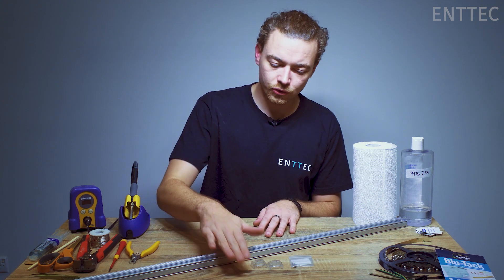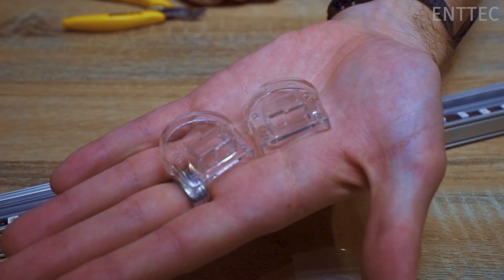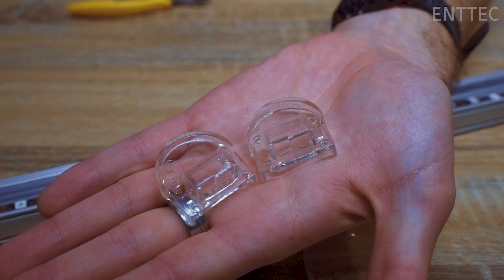Next, grab your extrusion and end caps. Most extrusions have one end cap with a hole for threading your wire through.